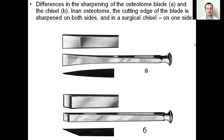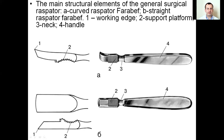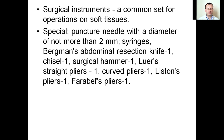The main structural elements of the general surgical respirator: A. Curved respirator Farabev; B. Straight respirator Farabev. 1. Working edge; 2. Support platform; 3. Neck; 4. Handle.